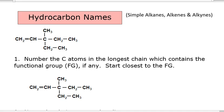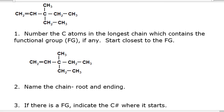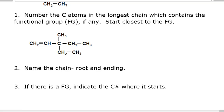This lesson is going to get into just a little more detail on naming hydrocarbons beyond just the root and the ending. By the end of this video, you should be able to name molecules such as the one shown here, which has branching and possibly double or triple bonds in it. We have five different steps that we use to name them. The first one is that we number the carbon atoms in the longest chain which contains the functional group, if there is one.